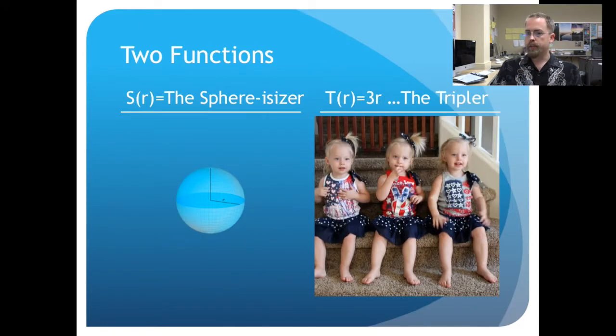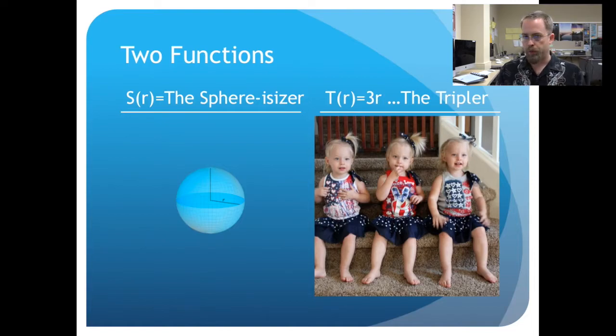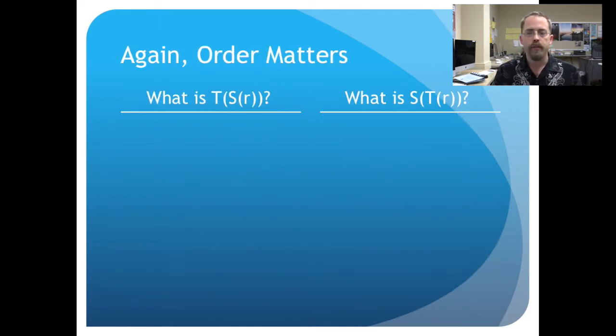Here is an example of two different functions. There is s(r), which takes a radius and makes a sphere out of that given radius. And there is t(r), the tripler, who takes a given radius and makes it three times bigger. You have to think about, again like the last lecture, order matters. There is a certain kind of precedence that happens when you take things in a certain given order.